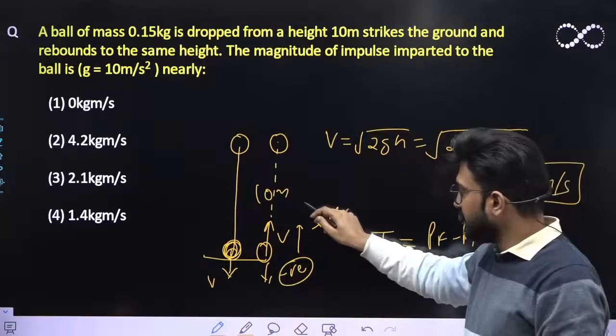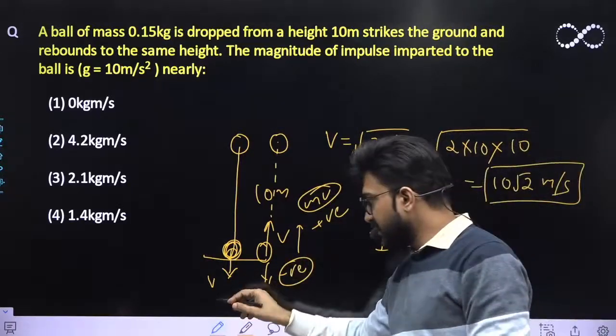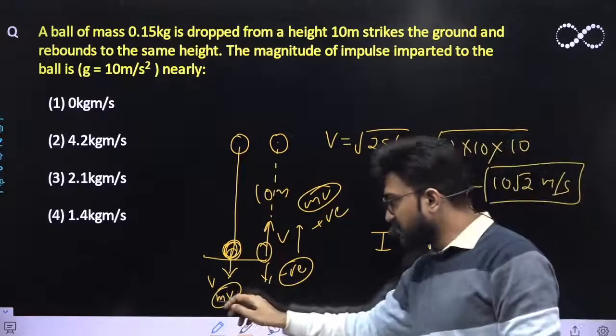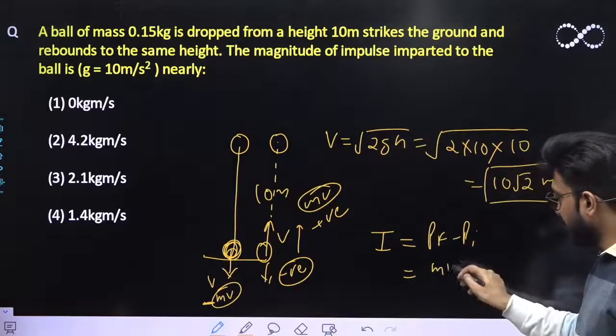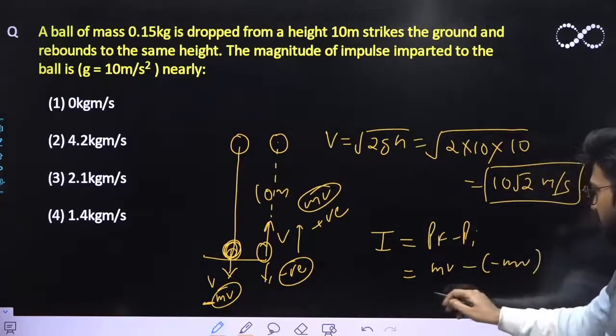In the upward direction the momentum is m·v, because v is the speed. In the downward direction the momentum is m·v. And the upward direction is positive, so that means this direction must be negative. So p_final is m·v, minus initial velocity is -m·v.